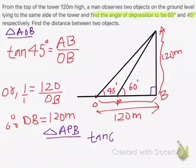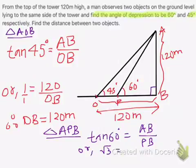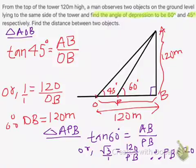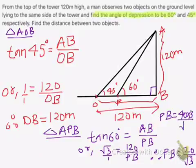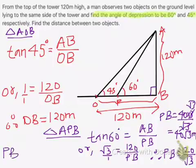Similarly, we can use the formula tan 60 degrees equals AB, which is the perpendicular, by base PB for this triangle. Tan 60 is root 3. AB is 120 and PB is PB. Now we can cross multiply, which gives PB equals 120 divided by root 3. We can further write PB equals 40 times 3 divided by root 3. This cancels to give 40 root 3 meters. We can use a calculator to determine the exact value in decimal, so 40 root 3 gives 69.28 meters.